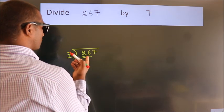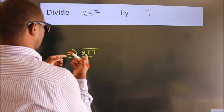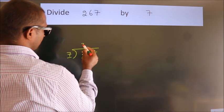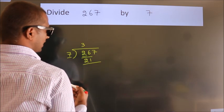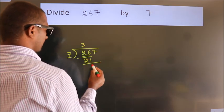A number close to 26 in the 7 table is 7 threes, 21. Now, we should subtract. We get 5.